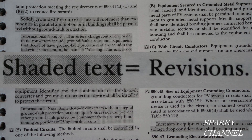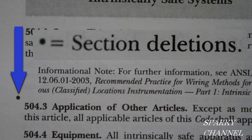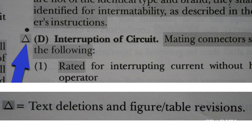Shaded text equals revisions. So for the 2020 NEC, if you see shaded text, something has been revised in that area. The period symbol you see right here before article 504.3 means section deletions — something right before article 504.3 has been deleted, and that little period alerts you to that situation. The delta symbol means text deletions and figure/table revisions. Note that this means text deletions, while the period means section deletions.